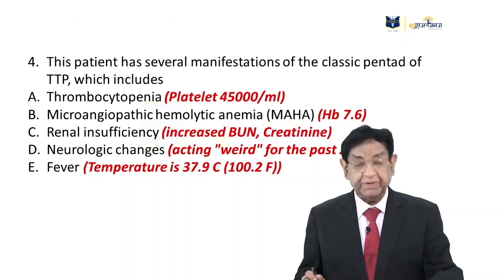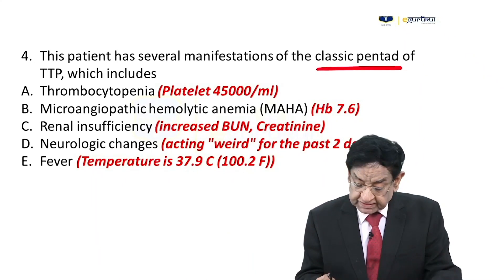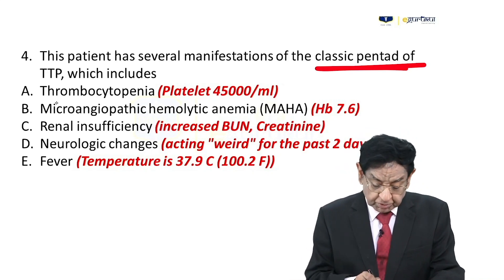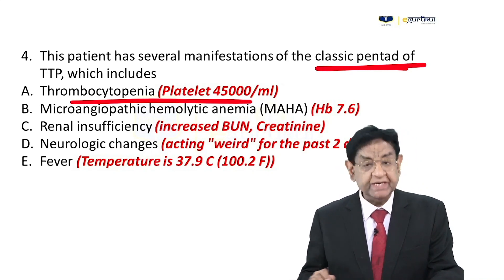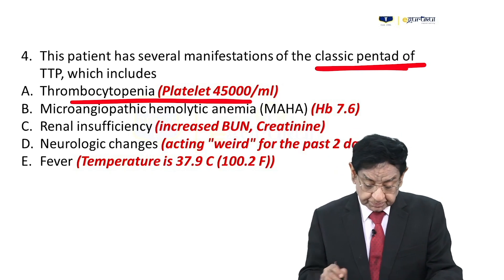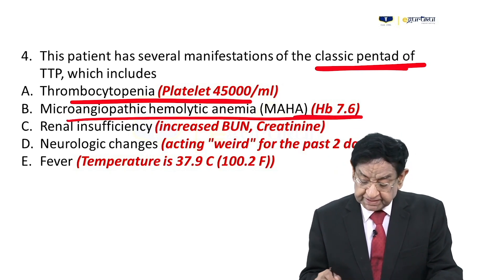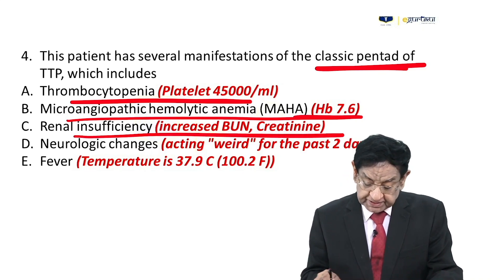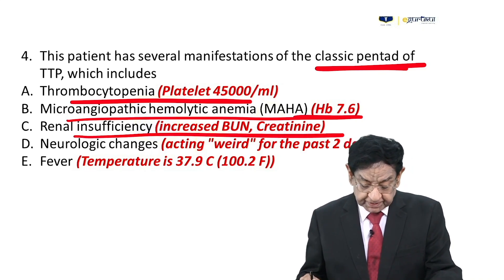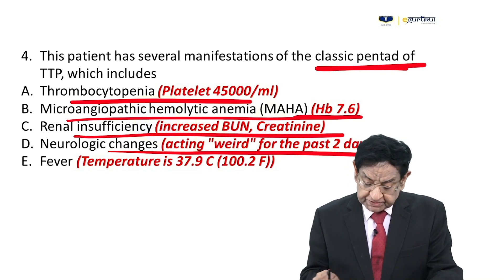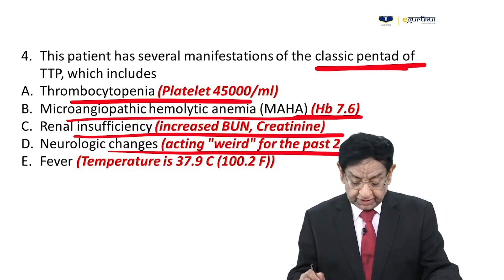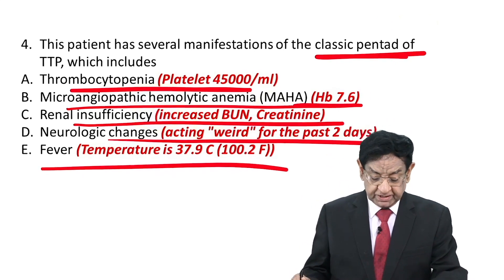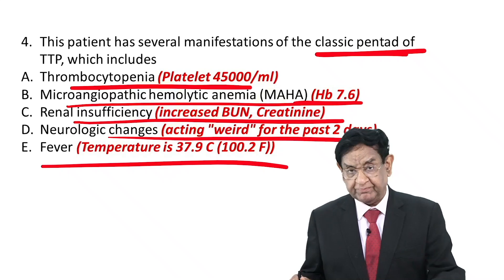TTP also causes end organ damage, particularly renal and CNS. Now, this patient has several features of the classical Pentad. TTP has a Pentad: thrombocytopenia (platelet count is reduced), microangiopathic hemolytic anemia (Hb is 7.6), renal insufficiency (increased BUN and creatinine), neurological changes (patient was behaving weird for the last two days, no focal deficit), and fever (patient is febrile). So we have all five features of the Pentad.